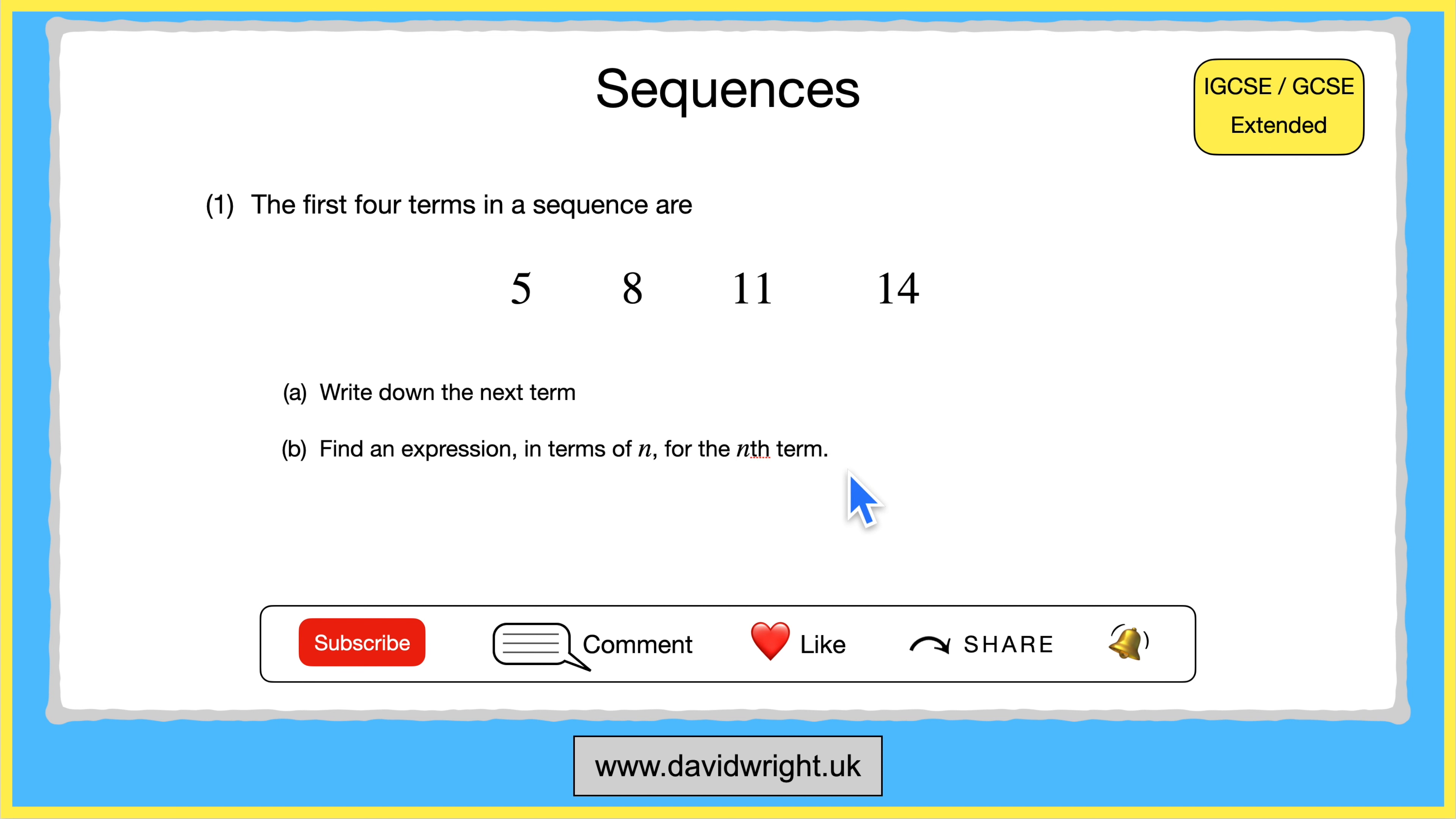So let's begin by answering part A. To do this we firstly look at the amount the sequence increases or decreases for each step. So here it increases by 3 because 5 plus 3 is 8. Then it increases by another 3 and then 3 more and so on.